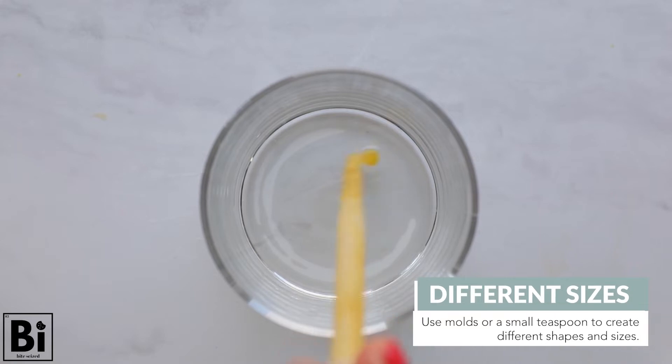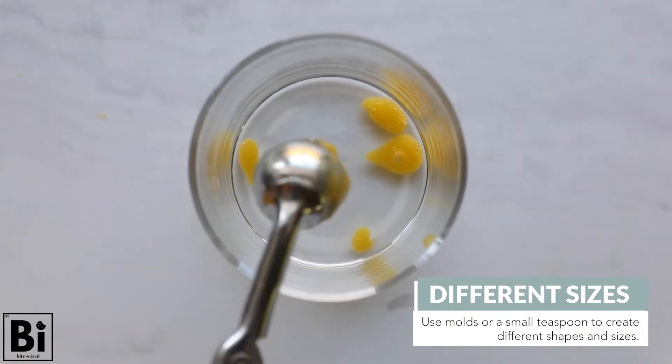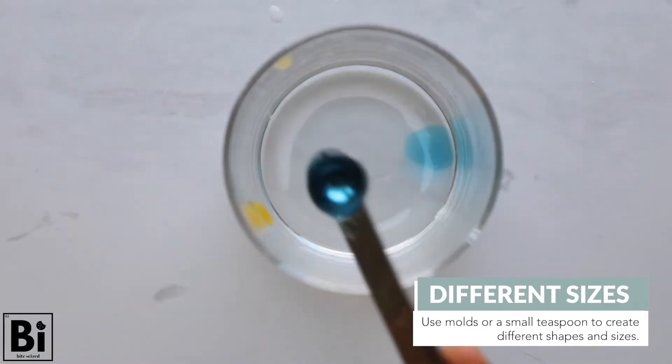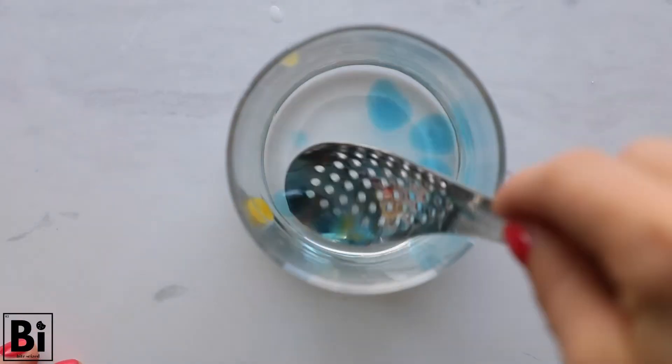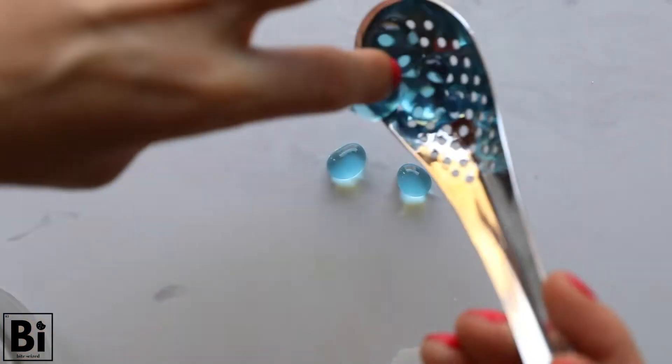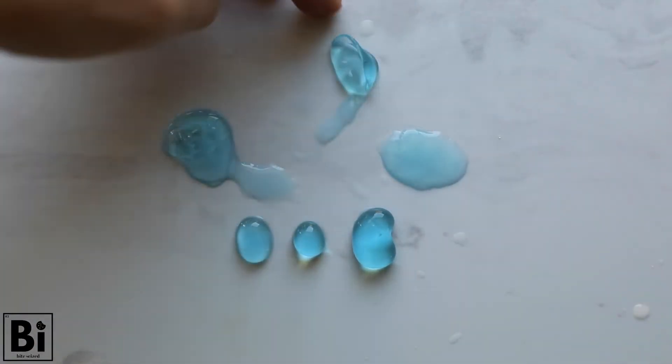From here, you can play around with different sizes by using molds or different sized spoons. Keep in mind that a larger sphere will take a longer time to sit in the calcium chloride bath to gel, but that's also something you can play around with. See how the time in the calcium chloride bath affects the outer gel-like coating and how thick it is.